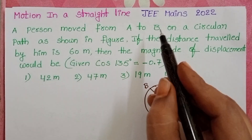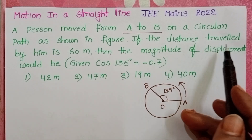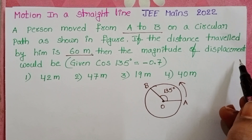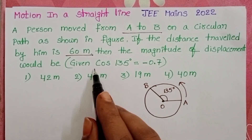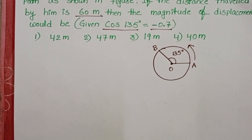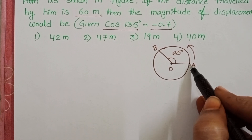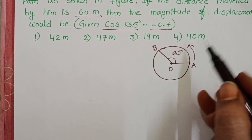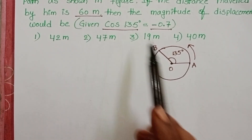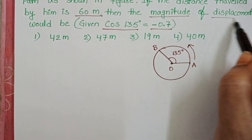A person moved from A to B on a circular path as shown in the figure. If the distance travelled by him is 60 meters, then the magnitude of displacement would be. We are given that cos 135° = −0.7. Observe the diagram: the person moves from A to B along the curved path. The arc length A to B is 60 meters. Using this, we have to find out the magnitude of the displacement.